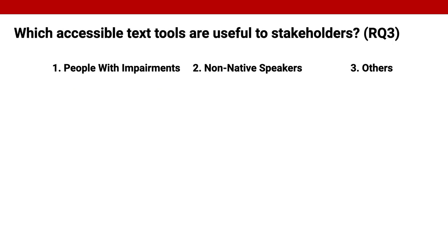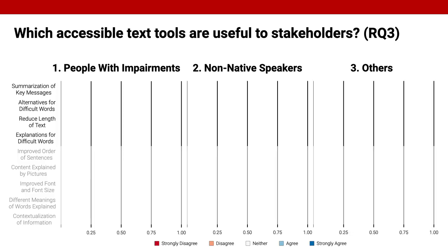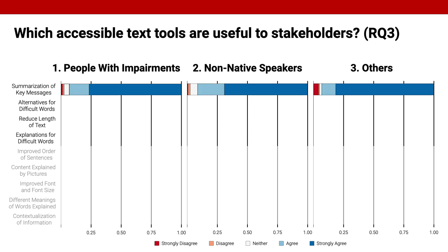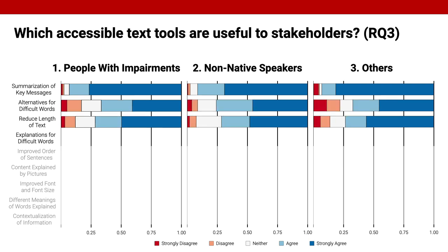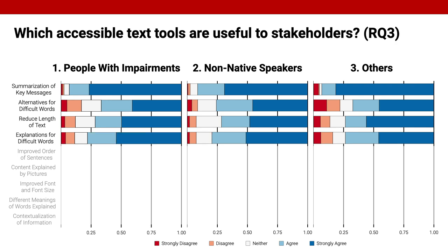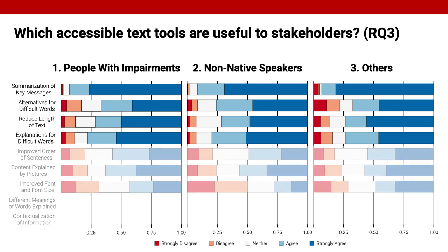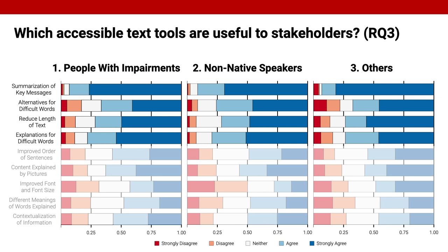The survey results also allowed us to rank the different accessible text tools. I will focus on the top 4 accessible text tools — please focus on the blue bars indicating agreement and refer to the paper for more detail. The summarization of key messages is perceived as most useful by all stakeholders. Accessible text tools that provide alternatives for difficult words, tools that help reduce the length of a text, and explanations for difficult words are also perceived as helpful. All tools are perceived as helpful by more than a quarter of stakeholders, and many are perceived as helpful by a majority of respondents, which makes them worth exploring in practice.